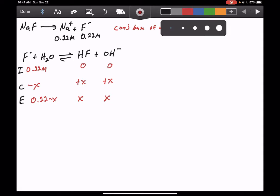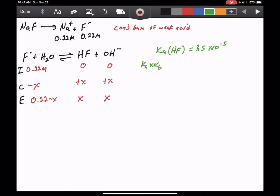We were given in this problem a value of Ka for HF of 3.5 times 10 to the minus 5. However, we have written a Kb for its conjugate base F minus, so we have to find the value of Kb for F minus. Because HF and F minus are a conjugate pair, Ka times Kb for the conjugate pair equals Kw, which is 1.0 times 10 to the minus 14, divided by 3.5 times 10 to the minus 5. We get a value of 2.86 times 10 to the minus 10 as the Kb for F minus.